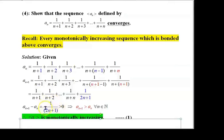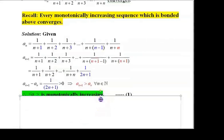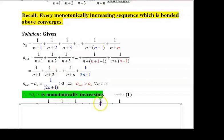Since 2n is positive, 2n+1 is positive, therefore 1/(2n+1) is positive. Hence, aₙ₊₁ minus aₙ is greater than 0 for all n, that is aₙ₊₁ is greater than aₙ for all n in ℕ. That means the sequence aₙ is monotonically increasing.